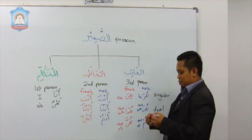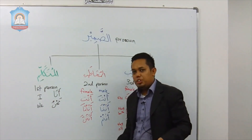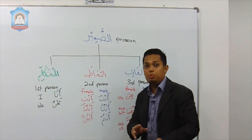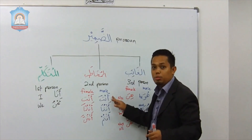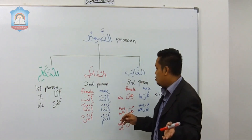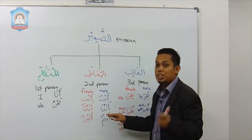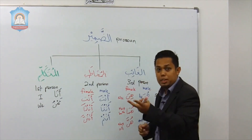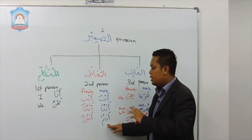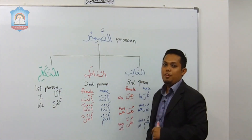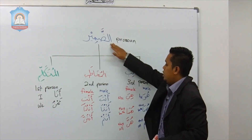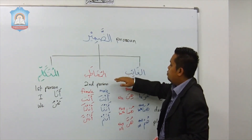Now, to understand this in English is a bit tricky because all these six pronouns in English will mean 'you.' Anta is 'you' for male singular, and anti is 'you' for female singular. Antuma is 'you' directed at two persons. Antum is 'you all' for male, and antunna is 'you all' for female. So there we have it — the second person pronoun.